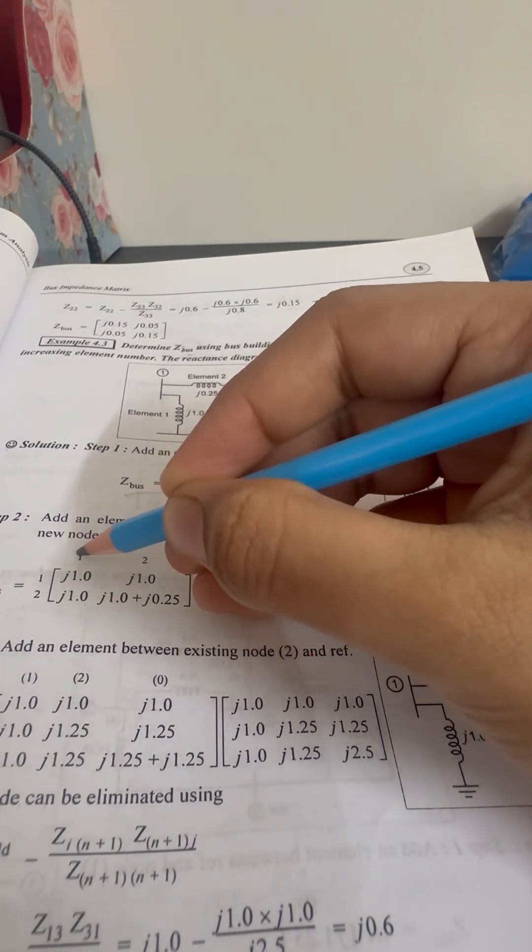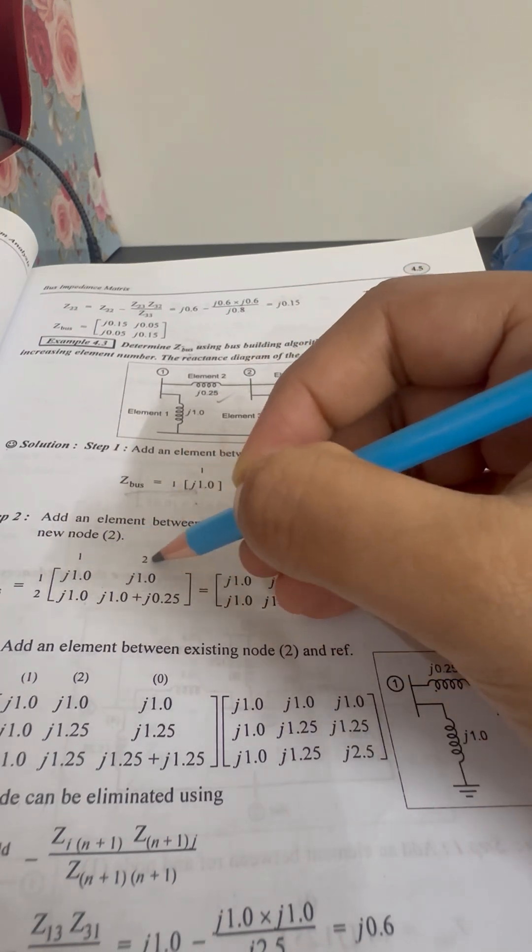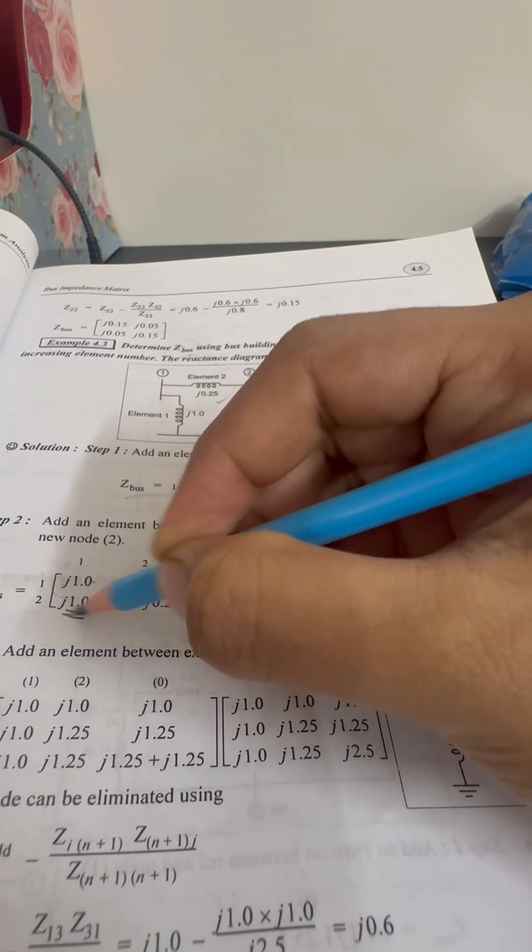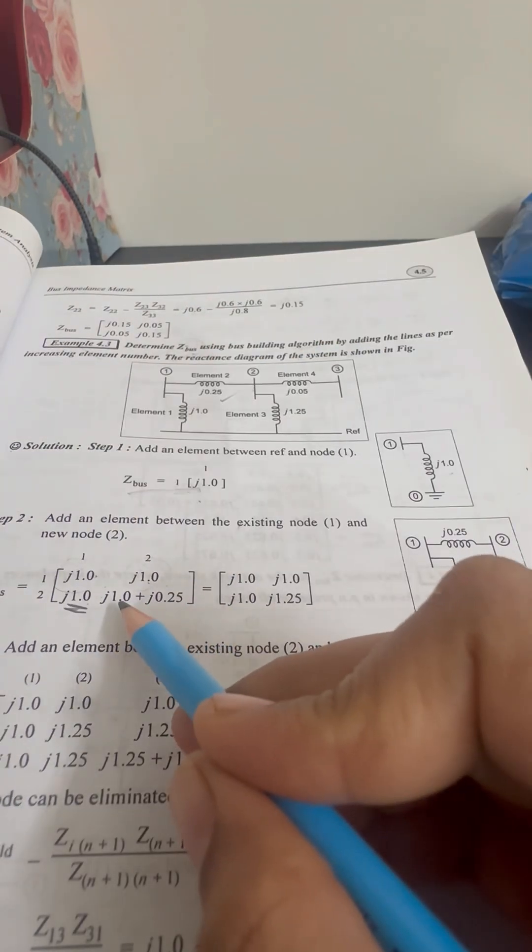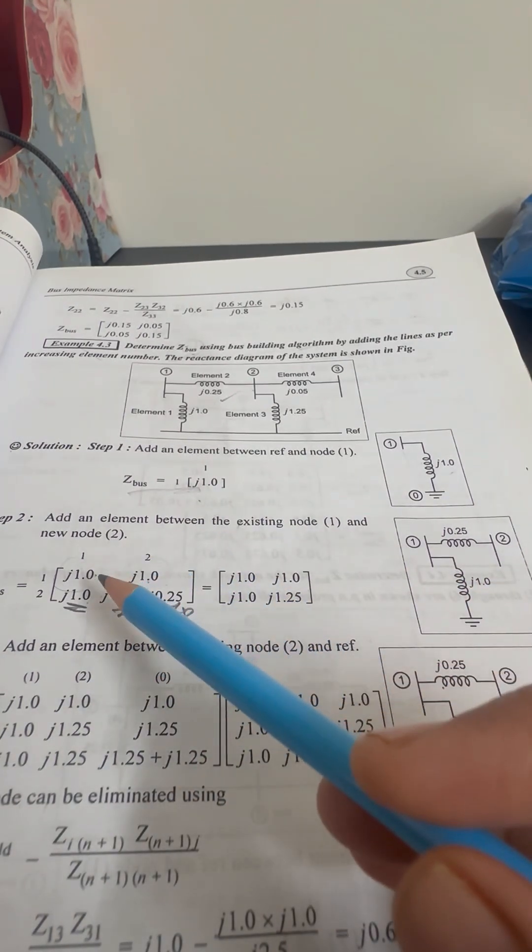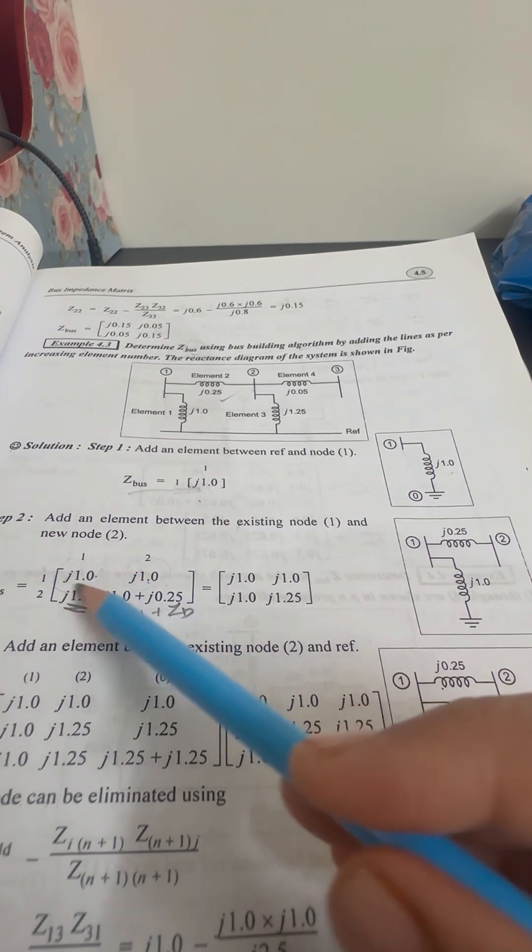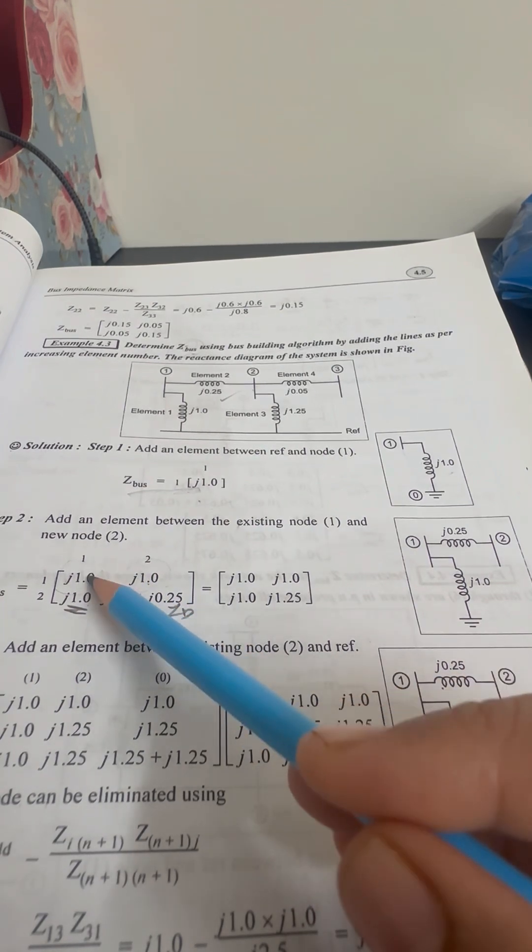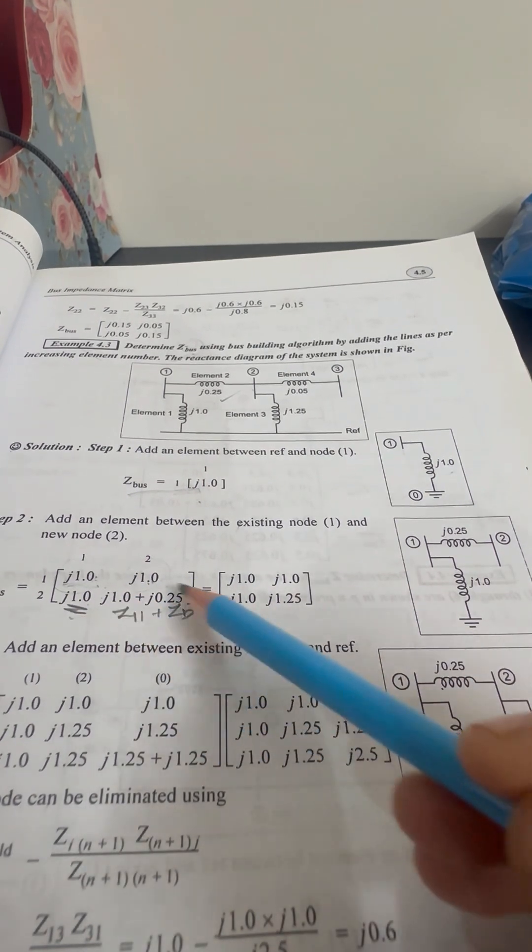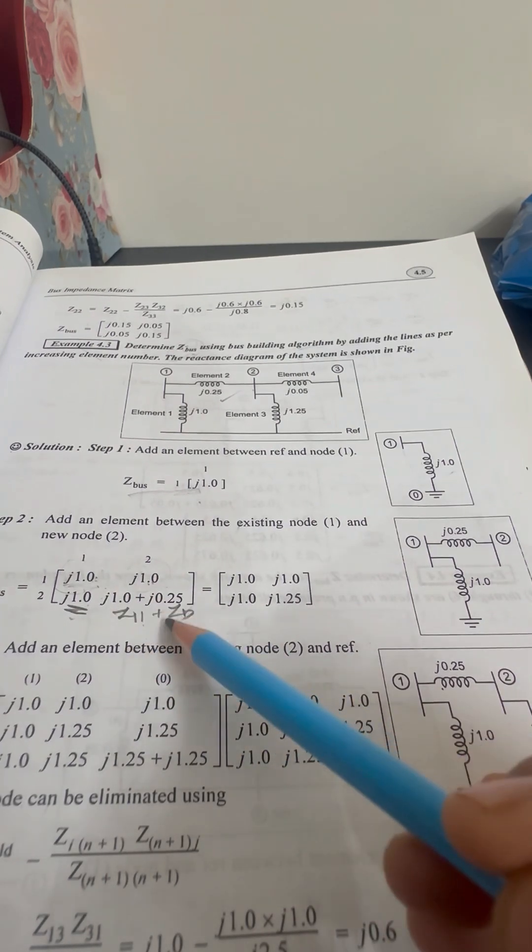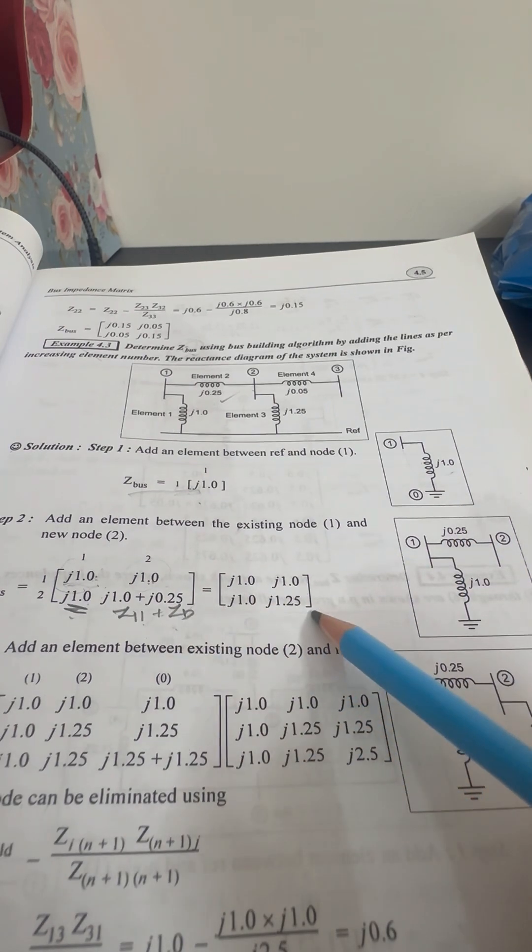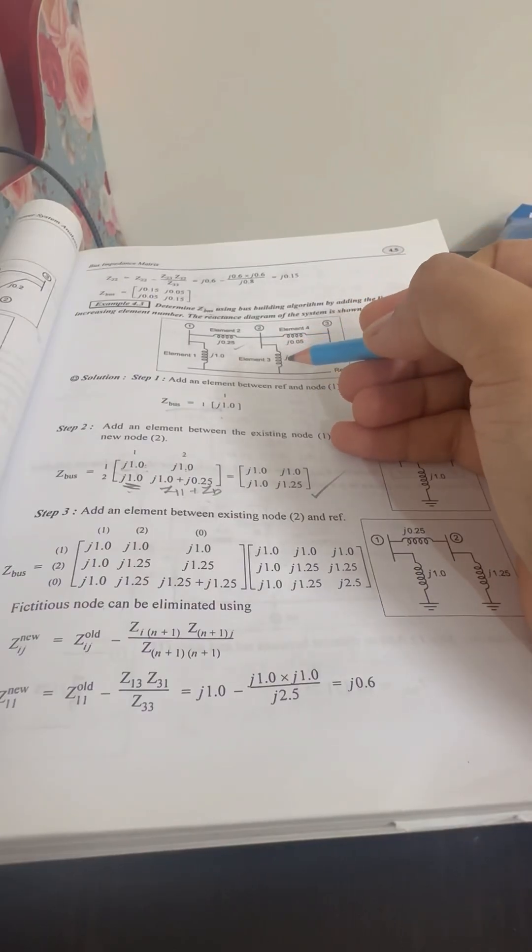The elements of the column 1 are copied as the elements of the column 2, and the elements of the row 1 are copied as the elements of row 2. The diagonal elements are Z11 plus ZB. The new value and impedance value are copied as the matrix. The next step is to connect the element 3 from the reference bus to the bus 2.